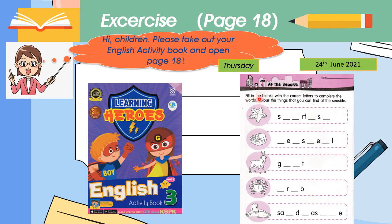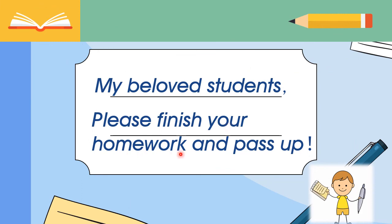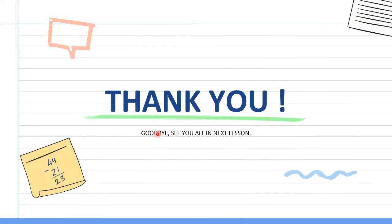Okay, this exercise — we need to fill in the blanks with the correct letters to complete the words, then color the things that you can find at the seaside. Look at here — the words are missing some letters, so you need to fill in the letters to complete the words. Color the objects that you can find at the seaside. Please finish your homework and pass it up today. Thank you, goodbye! See you all in the next lesson.